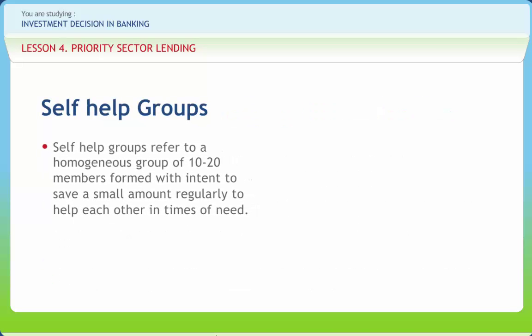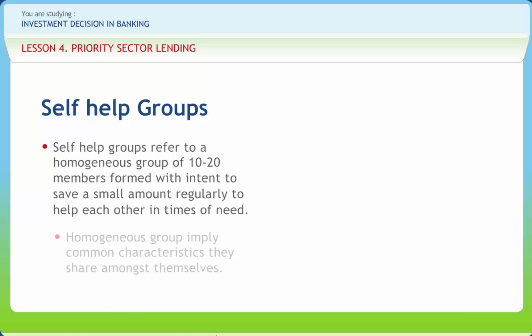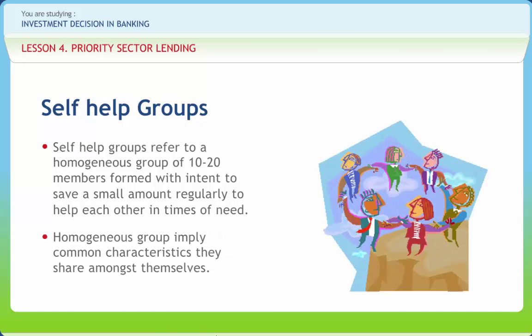Self-help groups refer to a homogeneous group of 10 to 20 members formed with intent to save a small amount regularly to help each other in times of need. Homogeneous groups imply common characteristics they share amongst themselves. Financing through SHGs reduces transaction costs for both lenders and borrowers. Pooled savings are kept in a savings bank account in the name of the SHG. Only one person of a family can be a member of a SHG. The group formed by members of heterogeneous background cannot depict a strong group dynamic, hence cannot be sustainable.